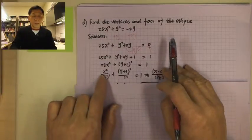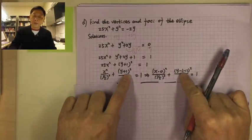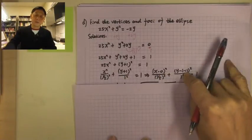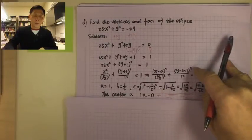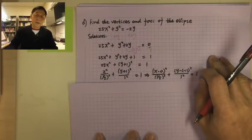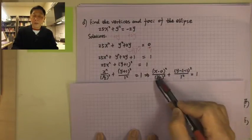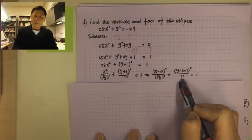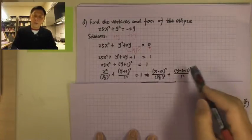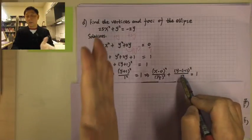Remember, x squared is (x minus 0) squared, and (y + 1) squared is (y minus negative 1) squared. This tells us the center is (0, negative 1). Looking at the denominators: 1 squared is below y and (1/5) squared is below x. Since 1 is bigger than 1/5, we have a = 1 and b = 1/5. The big number is underneath y, so the ellipse is in the vertical direction.